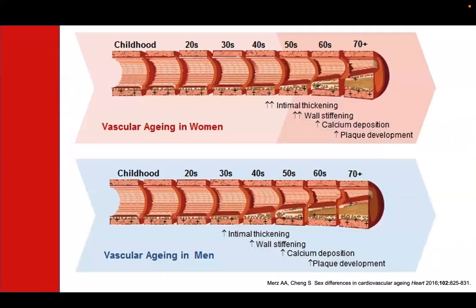This is a diagram that shows what typically happens with the process of arteriosclerosis. We start out our life with nice, thin, and flexible arteries. As we get older, things like diet, smoking, toxins, and stress can all lead to inflammation.